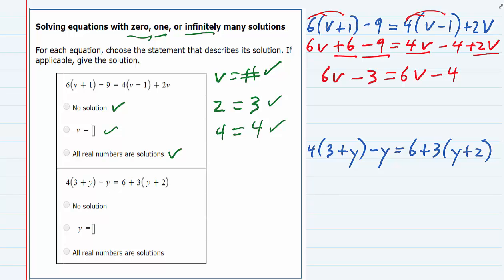From here, if we were trying to get the v's on one side, I would have to move one of these. Let's say I move the one on the right over to the left hand side. But that cancels the one on the right, and it also cancels the one on the left. So I'm left with minus three equals minus four.